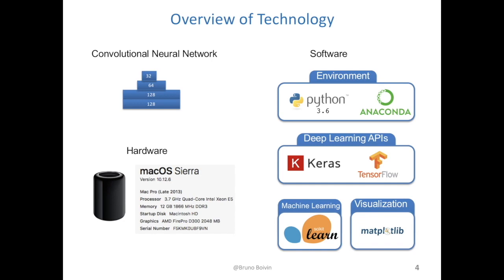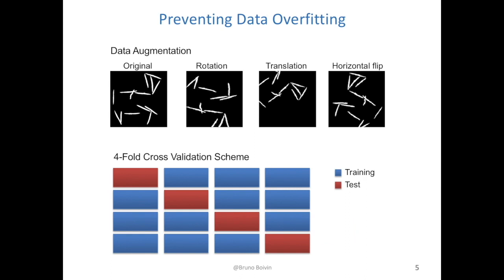To visualize the training process and performance, Matplotlib and TensorBoard were used. Everything was run on a MacPro computer with a quad-core CPU and 12GB of RAM. As I was saying, the dataset at hand is pretty small, and a few techniques were implemented to try and prevent data overfitting even before the model was built.